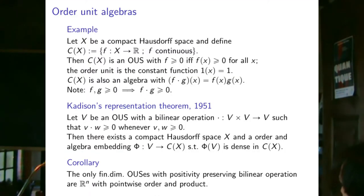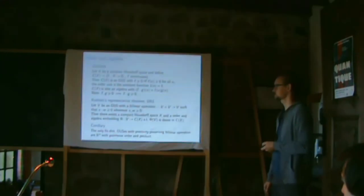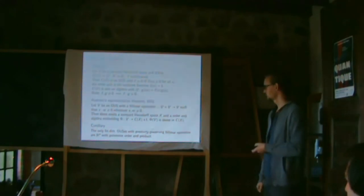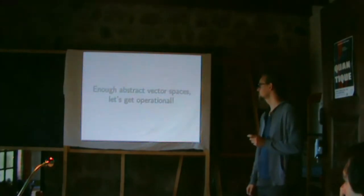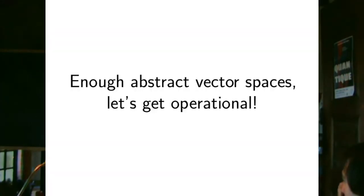A corollary: if I have a finite-dimensional order unit space with a positivity-preserving bilinear operation, it must be isomorphic to Euclidean space with the standard order and product — a very simple space. That was the abstract mathematical part.